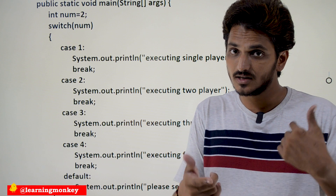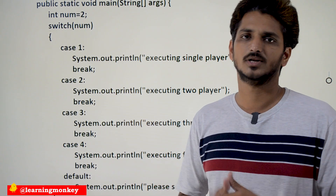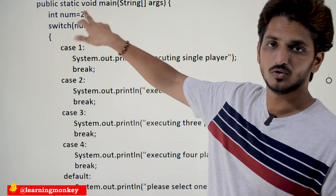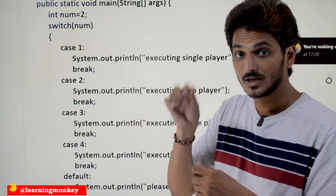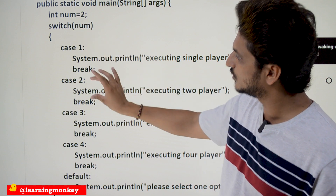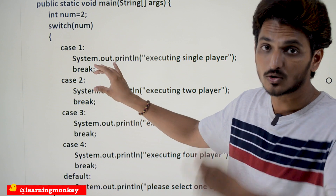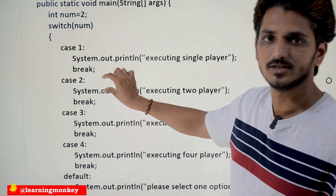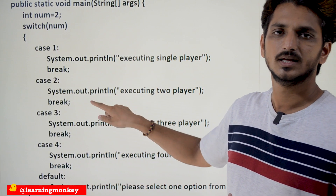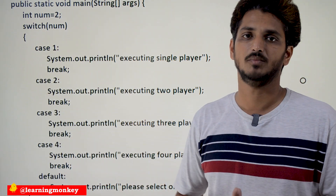As the number of players increases, you have to change the logic. If you click num equal to two on the display screen, your input is two, so it is taken into num. If num is equal to two, two-player logic code has to be executed — that code should be written here in this case, and after completion of this, break. That is how we are going to use switch statement in these kinds of situations.